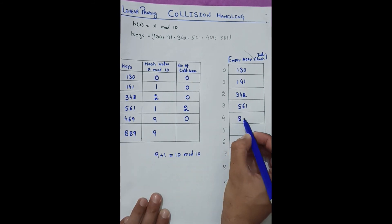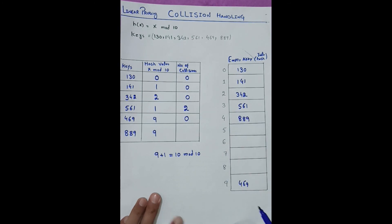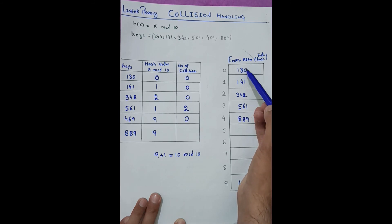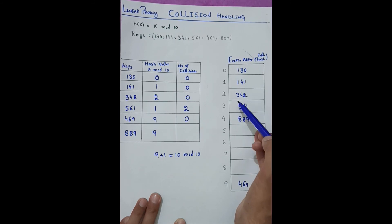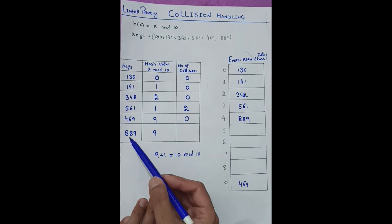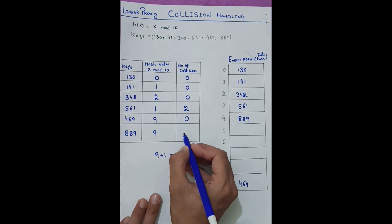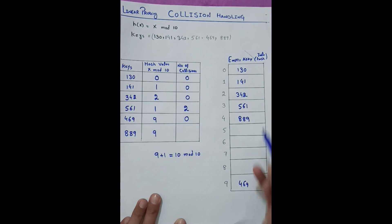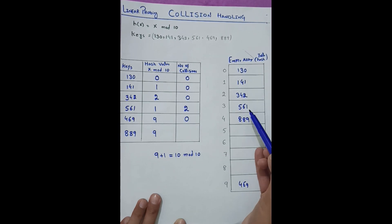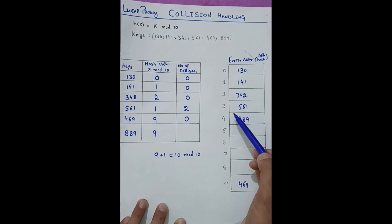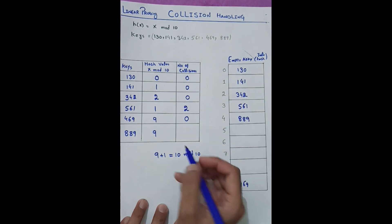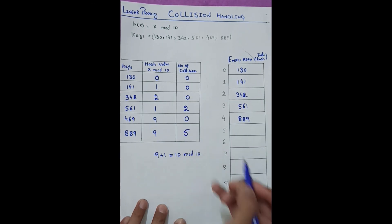Index 4 is empty, so we place 889 there. Counting the collisions: index 9 (1), index 0 (2), index 1 (3), index 3 (4), and one more — totaling 5 collisions for placing 889 at index 4.